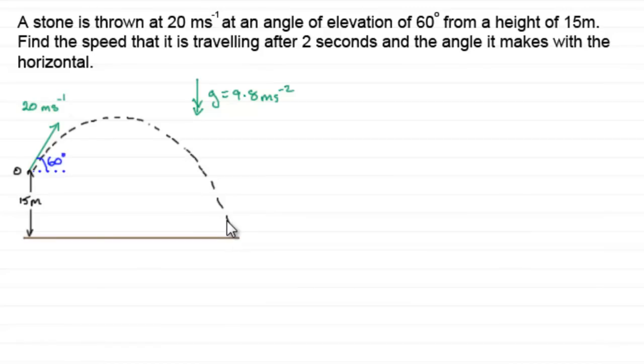And to do this, what I've got here is an example where we've got a stone is thrown at 20 metres per second at an angle of elevation of 60 degrees from a height of 15 metres. We've got to find the speed that it is travelling after 2 seconds and the angle that it makes with the horizontal.